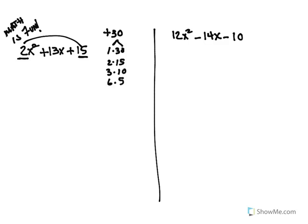And you have to pick the pair that can give you the 13. The 2 and the 15 could give me 13. However, one would have to be positive and one would have to be negative, and the product of those would create a negative 30, not a positive 30.